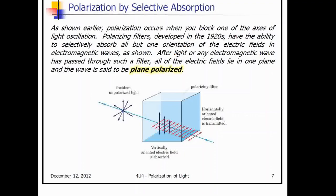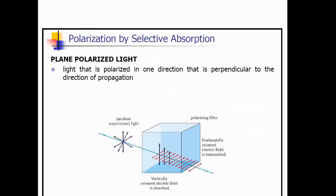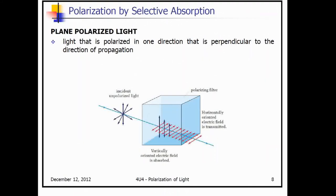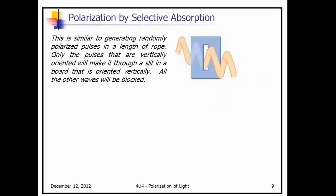The vertically oriented electric field is absorbed in the polarizing filter — that's anything that had any vertical component to it. Plane polarized light is light that is polarized in one direction that is perpendicular to the direction of propagation.